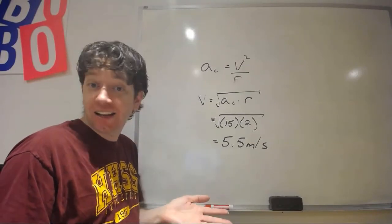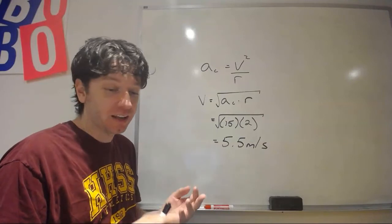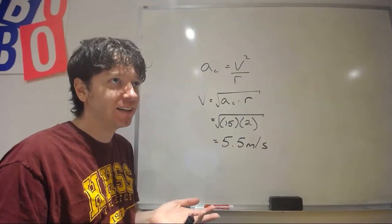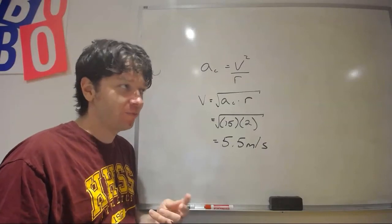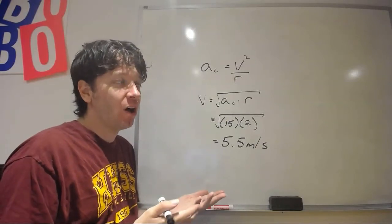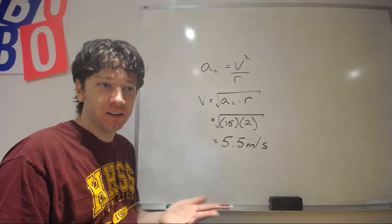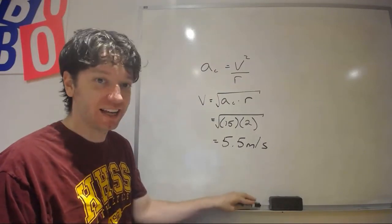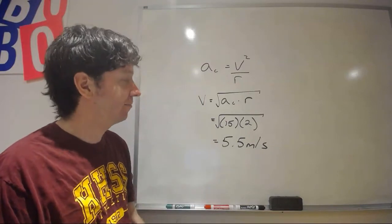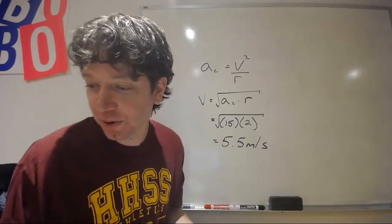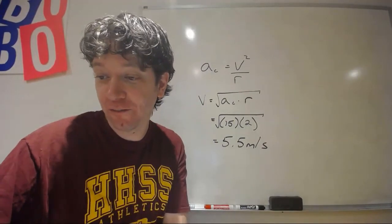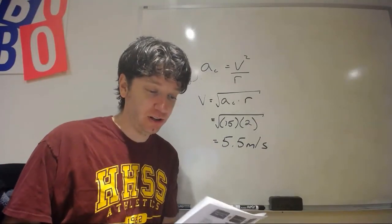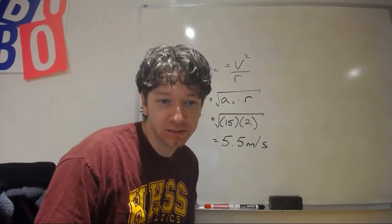In this case you do not need to write a direction because the question asks for speed, not velocity. If it did ask for velocity, you could say it's always perpendicular to the radius, but I won't ask you to state that when calculating. In the next lesson we're going to specifically look at forces and drawing free body diagrams for centripetal forces.